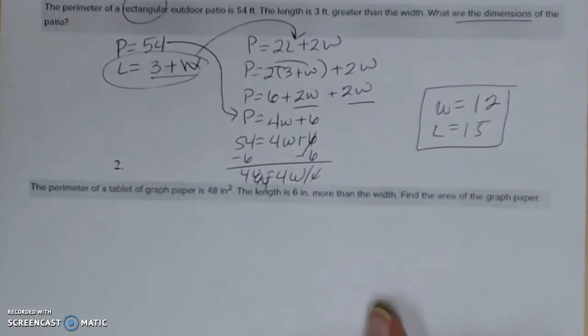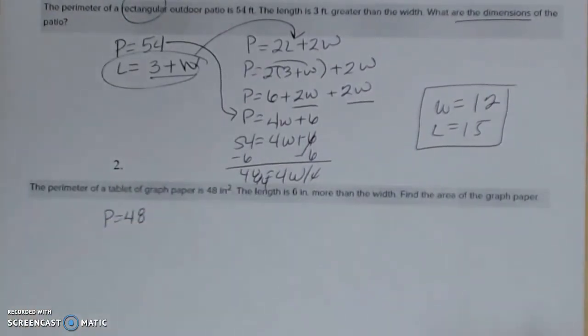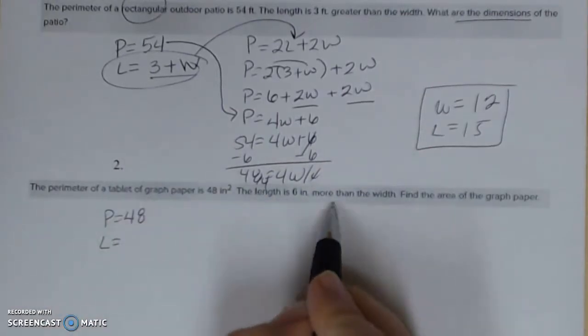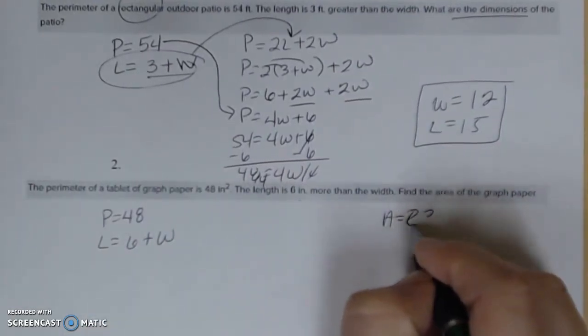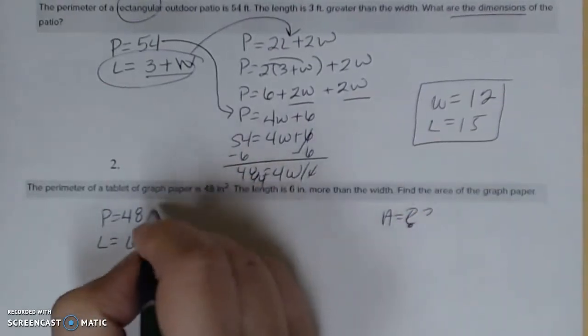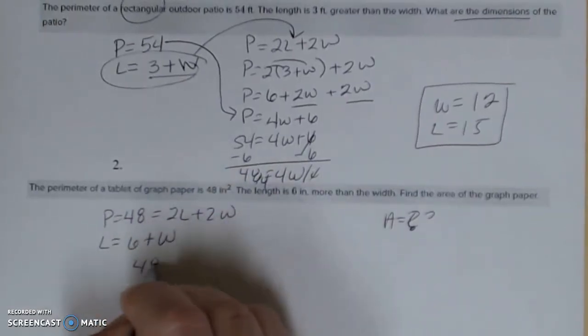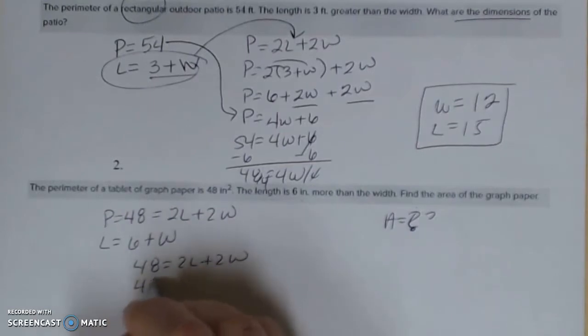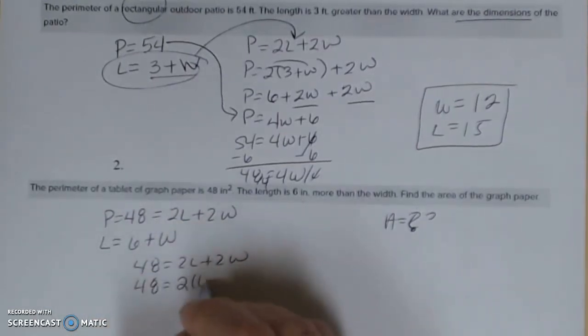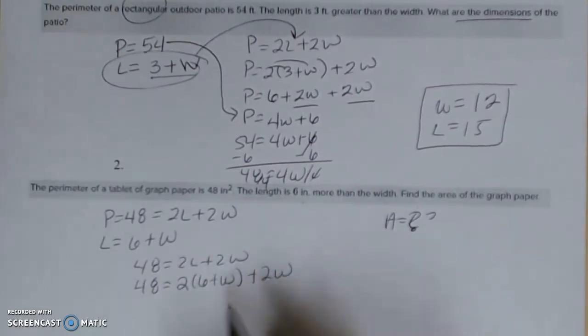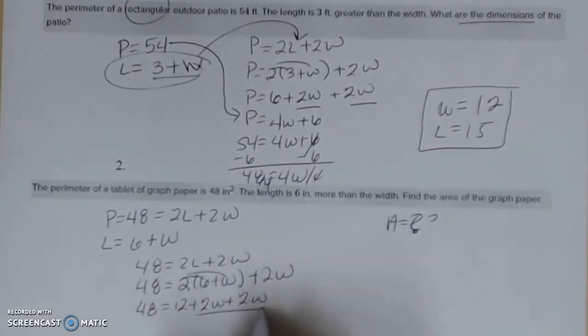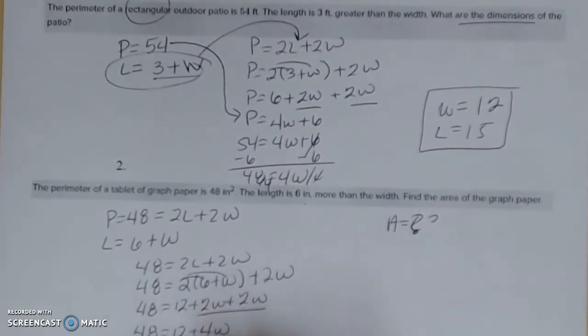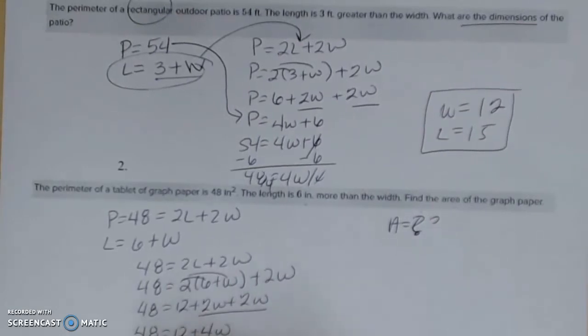Number two, it says the perimeter of a tablet of graph paper is 48 inches. So perimeter is 48. The length is 6 inches more than the width. Find the area. So trying to figure out that area. Okay, so I'm going to start here. I know perimeter is equal to twice the length plus twice the width. So I'm going to plug in what I know. Two times, let's see, my length is 6 plus W plus 2W. So I'm just going to solve it out. Distribute. Combine. And solve for W. So this gives me 9.